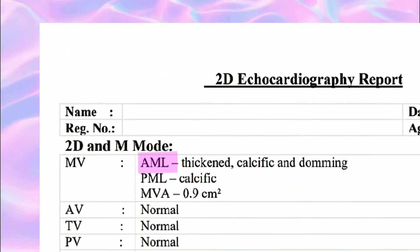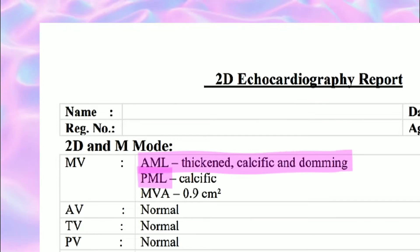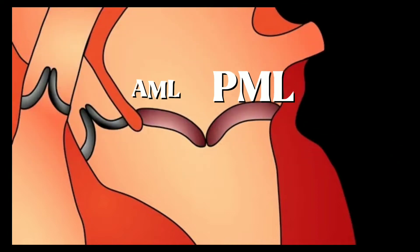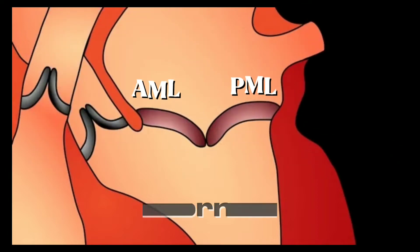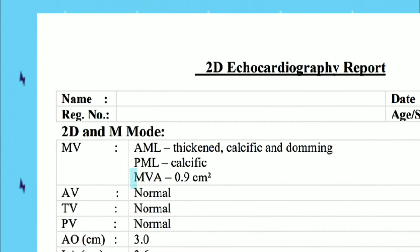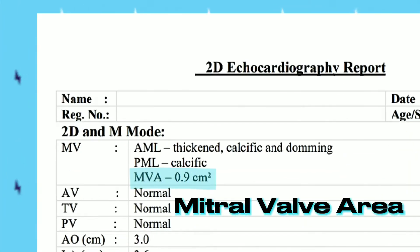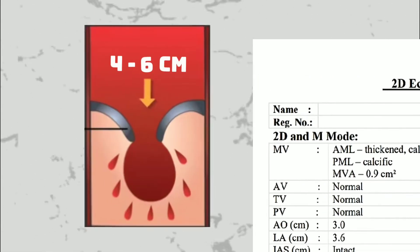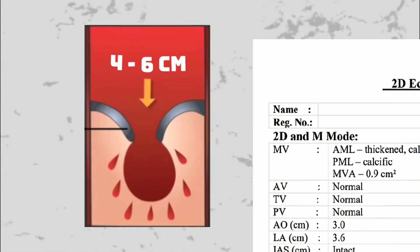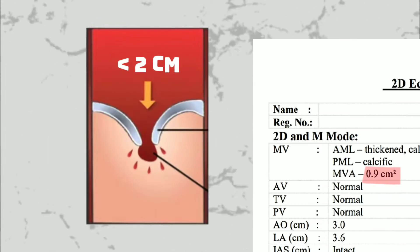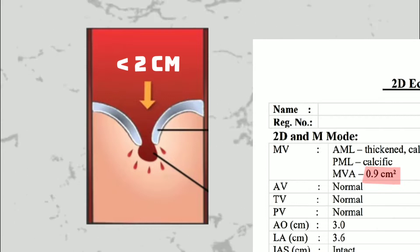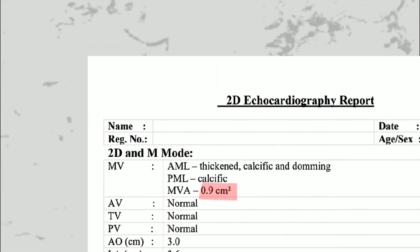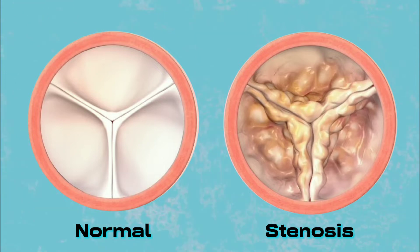The 2D-Echo also gives detailed information about the leaflets of the mitral valve — the anterior mitral leaflet and posterior mitral leaflet — which can be normal, thickened, or calcified. MVA means mitral valve area. The normal area of the mitral valve orifice is about 4 to 6 centimeters. When the mitral valve area goes below 2 centimeters, the valve causes an impediment to the flow of blood into the left ventricle, creating a pressure gradient across the mitral valve.